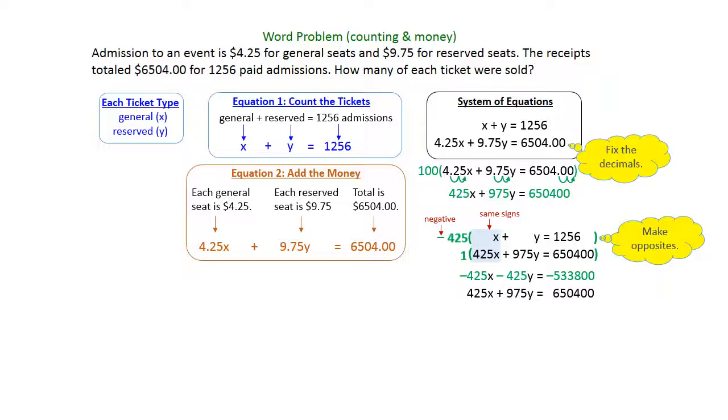The second equation doesn't change, I'm just going to rewrite it under the first one, because multiplying by one doesn't change anything. When we add the two equations together, you'll see your x's are opposites and they cancel out, and you just have to put your y's together. Negative 425 plus 975 is 550. And then put your constants together. The negative 533,800 plus 650,400 is 116,600. The last thing to do is divide by the 550 in front of the y. So we are going to do that and get y equals 212.